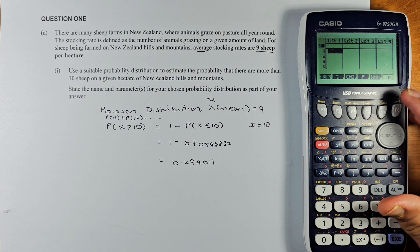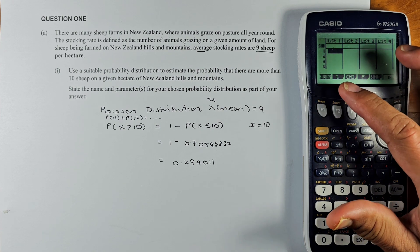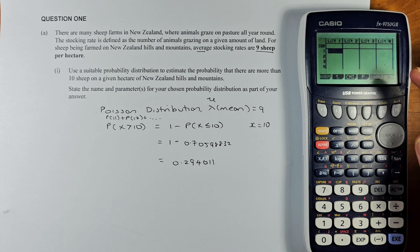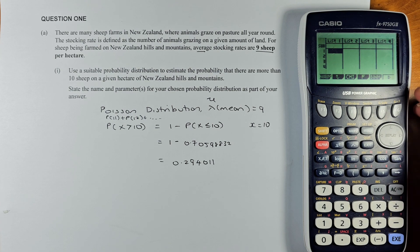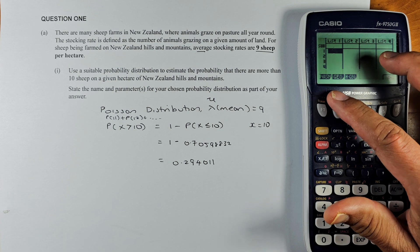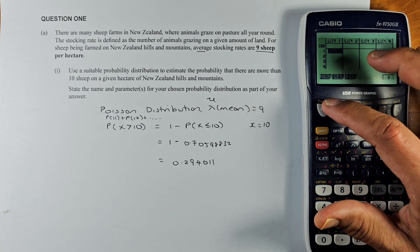If you look at F6, there are more functions. There's normal, there's t, there's chi squared, there's F, and then there's binomial. To get Poisson, you need to press F6 and then you can find Poisson P-O-I-S-N. Press Poisson, okay.